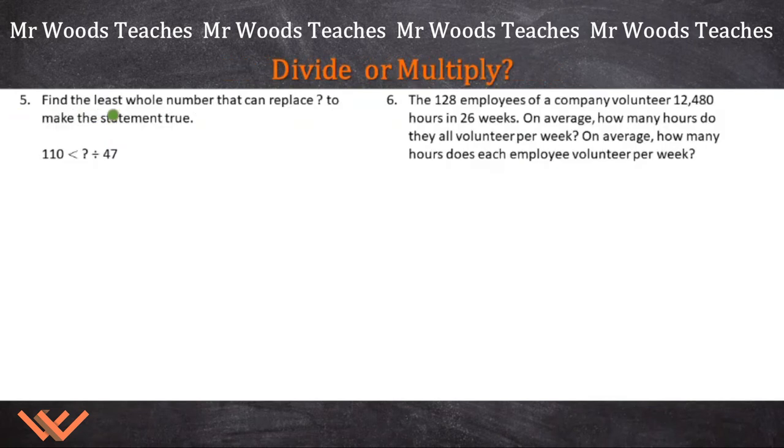Number five, find the least whole number that can replace the question mark to make the statement true. Let's look here. So it's replacing this right here. What can we do to make this statement true? And it's the least whole. So we have to understand what least is and whole number. Whole number is not going to be a fraction or a decimal. It's like one, two, three, four, five, and the least one. So it has to be the smallest number possible for this right here while still maintaining a whole number. This is my strategy to answer this math problem.